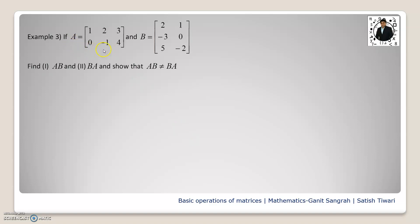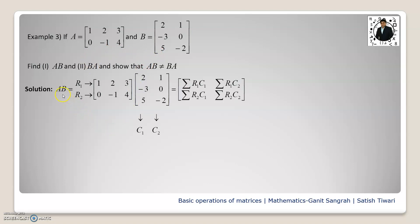For our numerical example, matrix A is of order 2 by 3 and matrix B is of order 3 by 2. Since the number of columns of A equals the number of rows of B, matrix multiplication A times B is possible. Computing the first element: 1 times 1, plus 1 times 2, plus 0 plus 3, minus 2.